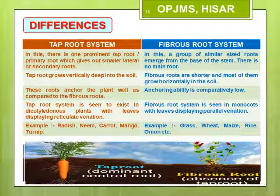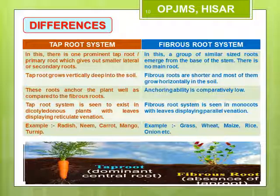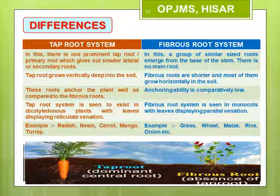In the tap root system, the main root called the tap root or primary root comes out from the seed. It is thicker at its upper part and generally tapers downward. The primary root gives out several branches in every direction; these smaller branches are known as lateral or secondary roots. Mango, neem, pine, and carrot are some examples of plants with tap root system. In a carrot plant, the tap root gives out several lateral branches.